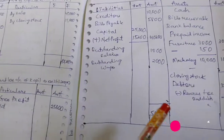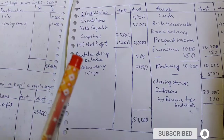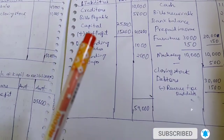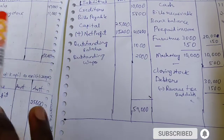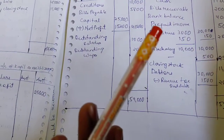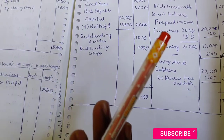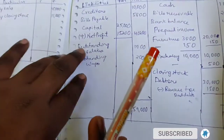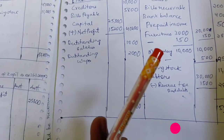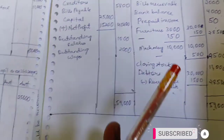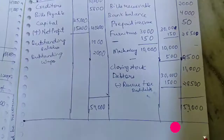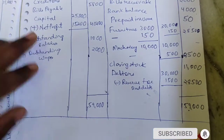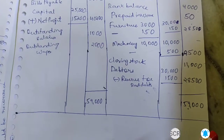For clarity: outstanding — always plus; depreciation — always minus; prepaid — always minus; accrued — always plus. Outstanding goes on the liabilities side; depreciation and prepaid go on the asset side. Minus goes to liabilities side plus goes to liabilities side as well. Now balance all accounts.